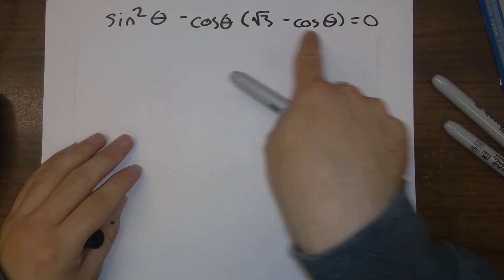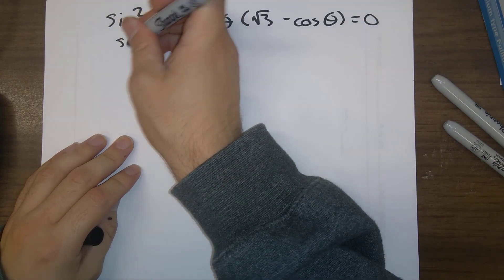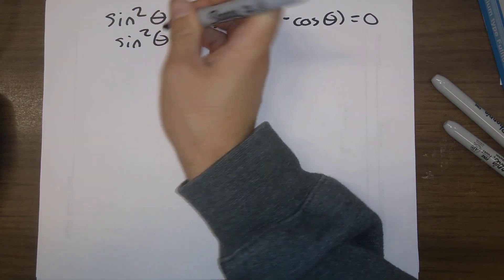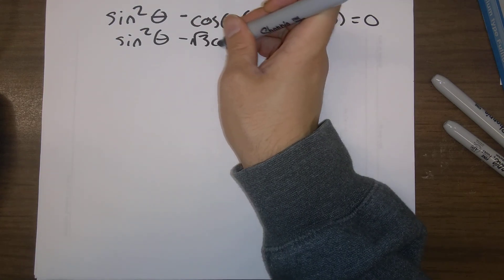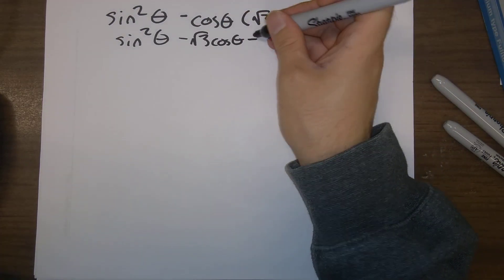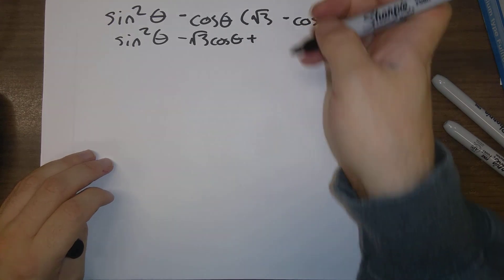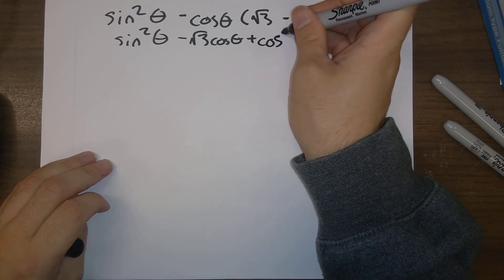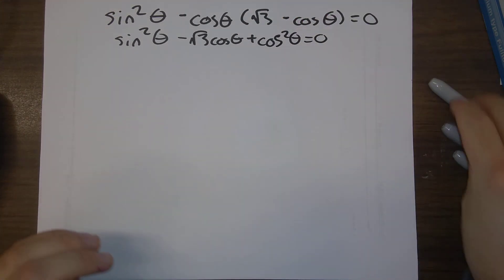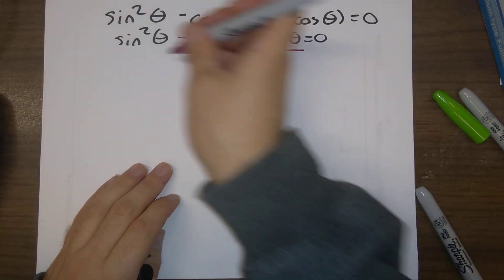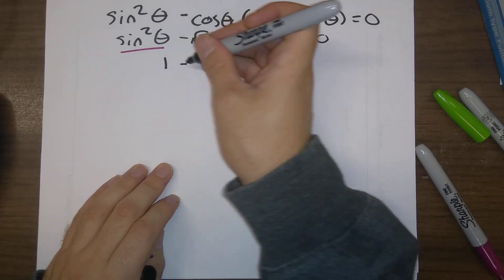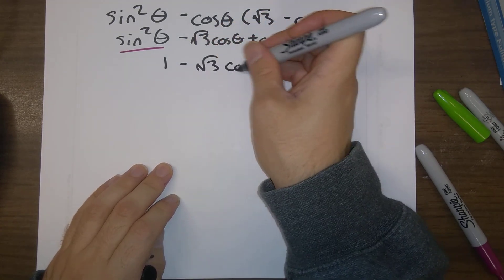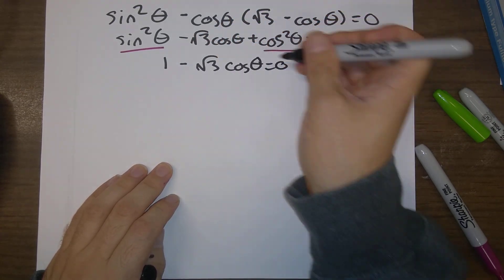Expanding out this multiplication, we'd have sine squared theta minus root three cosine theta plus cosine theta times cosine theta is cosine squared theta, is equal to zero. And oh, look, what do we have? Cosine squared plus sine squared, that adds to one. So one minus root three cosine theta is equal to zero.